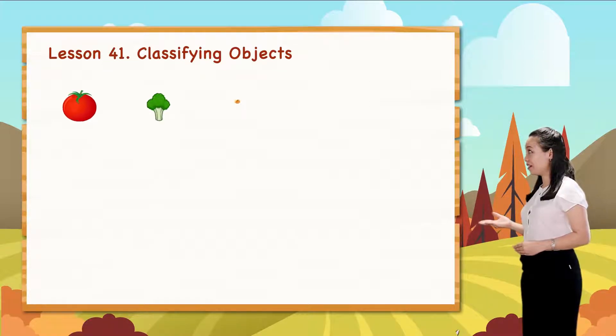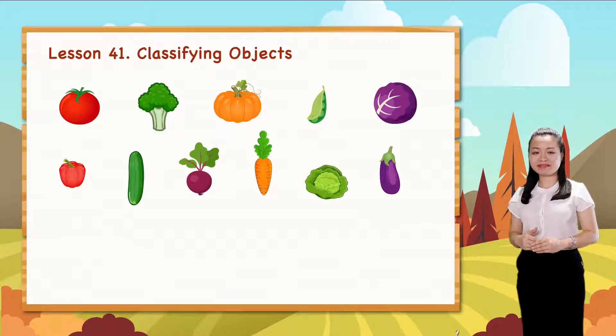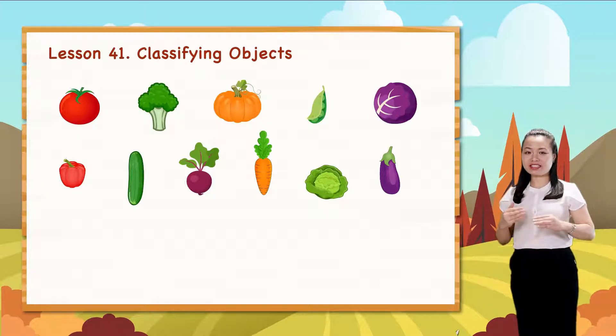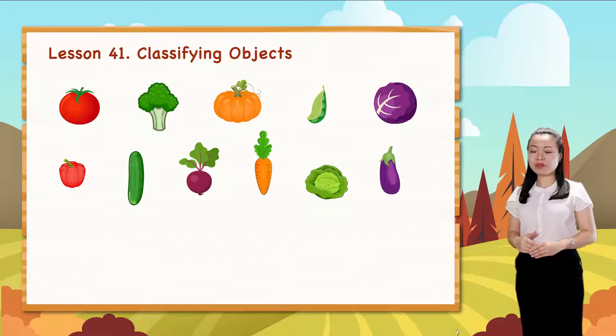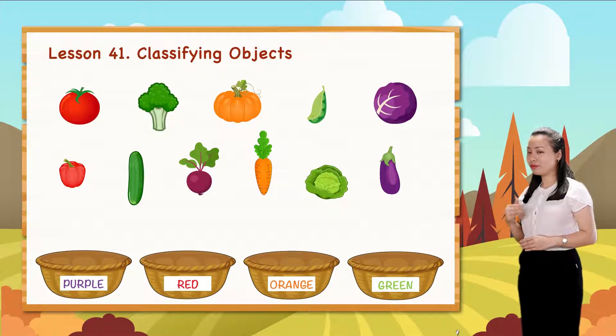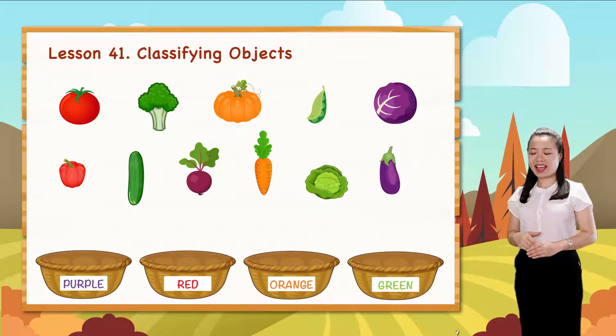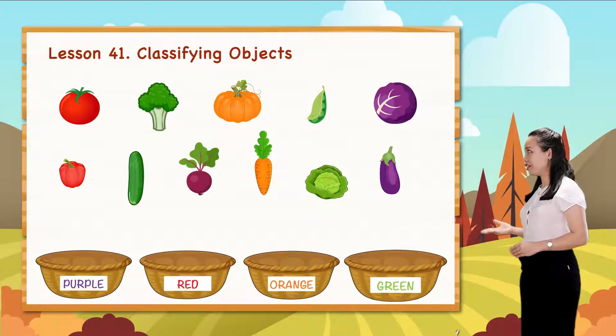Look, we have a bunch of vegetables. They are all different. Now we classify this bunch into four groups according to color: a purple group, a red group, an orange group, and a green group.